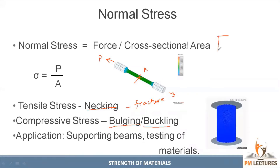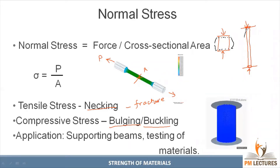Let's say you have a bar of a certain height. If the bar is not short but is tall and slender, under a compressive load it is bent — that is buckling action. Buckling and bulging depend on the ratio of L by D.